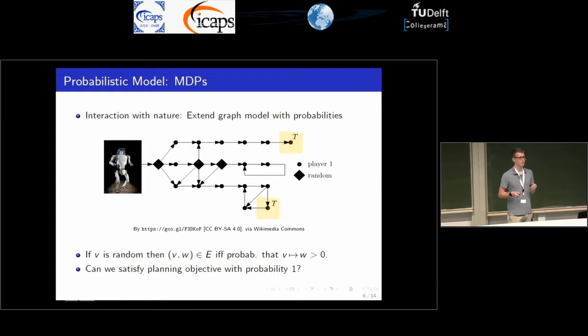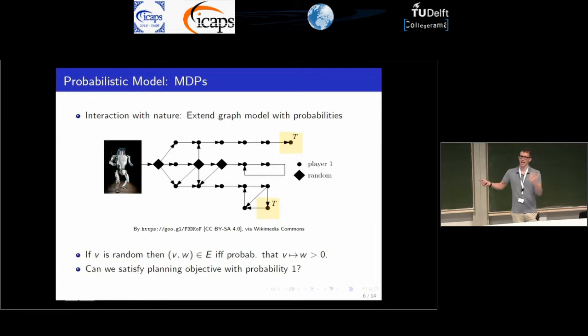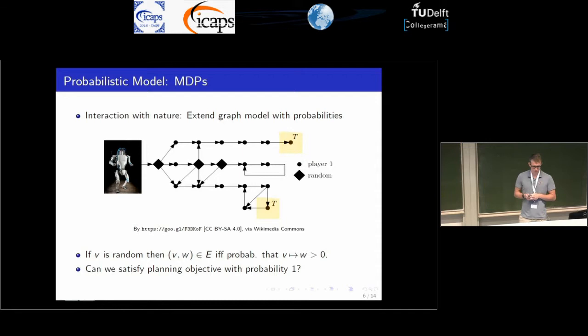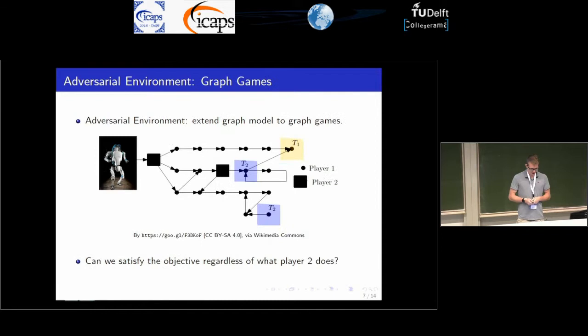The first model is nature, where you extend the graph model with probabilities. The starting vertex leads to some nature node. We don't care about precise probabilities, but if there is a positive probability to go from one state to the next, there is an edge in our model. Imagine this is some kind of river where the robot is dragged in three cases. In this case it's not possible because due to some unfortunate events the robot is dragged down the middlemost path and stuck in a loop.